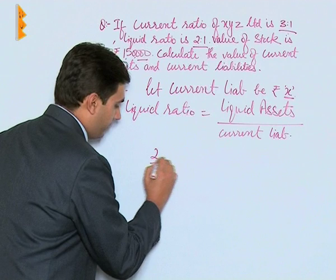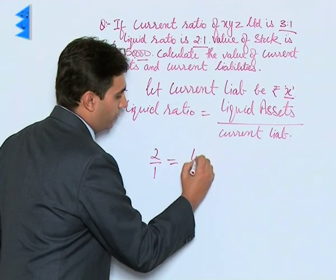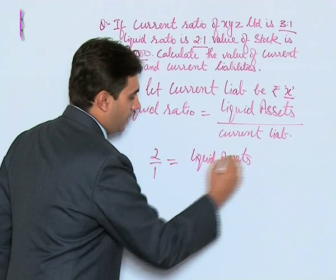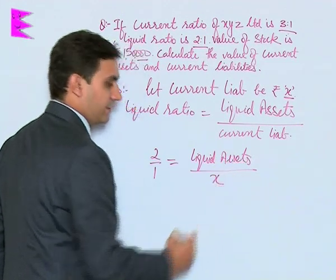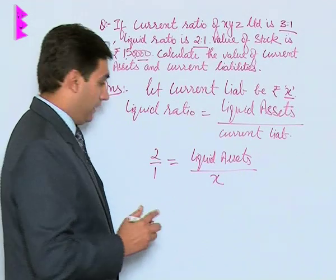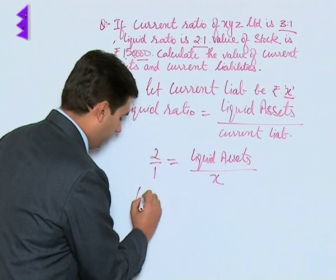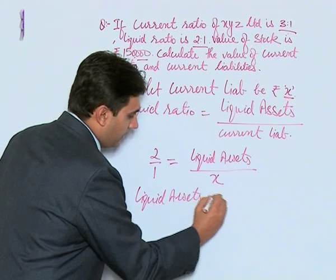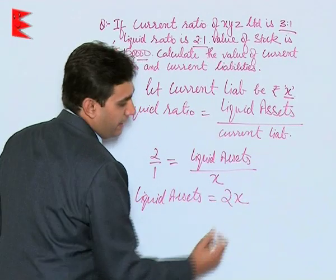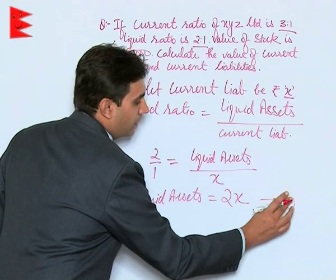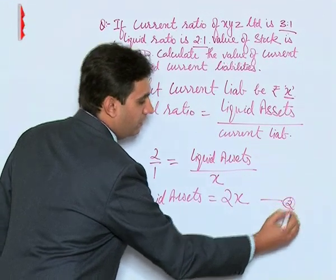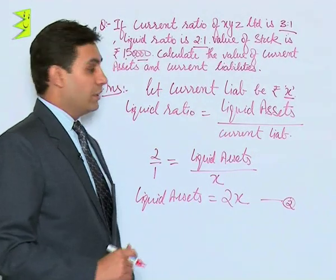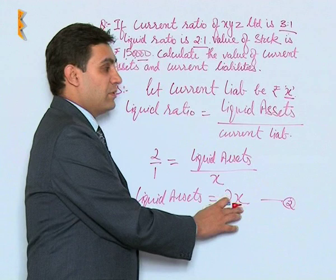So 2/1 = liquid assets / X. By cross multiplying, we get liquid assets = 2X. This is equation number 2. So liquid assets are equal to 2 times the current liabilities.